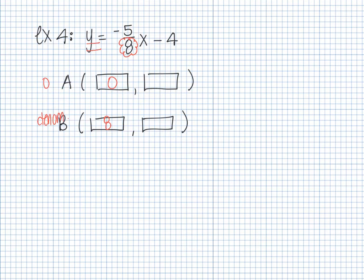For the first point, let x equal zero. That gives me negative 5 over 8 times zero minus 4. Negative 5 over 8 times zero is zero, so zero minus 4 gives me negative 4. So my y value is negative 4 when x equals zero — my first point is (0, negative 4).